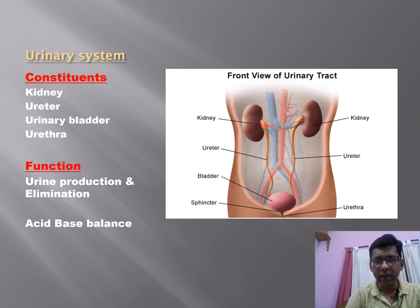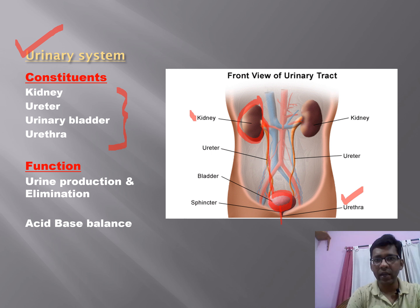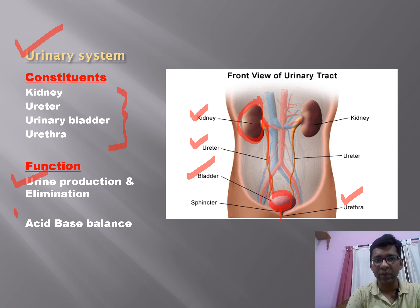The urinary system consists of the kidney, ureter, urinary bladder, and urethra. The kidneys produce urine, which travels via the ureter and accumulates in the bladder, then exits the body via the urethra. Their function is urine production and elimination. The kidney also has a vital function in acid-base balance.